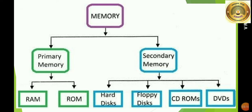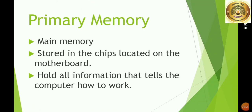Let's see primary memory. Primary memory is the main memory of a computer. It stores chips located on the motherboard. Inside the computer CPU, you can see a chip located on the motherboard. This primary memory holds all the information that tells the computer how to work.